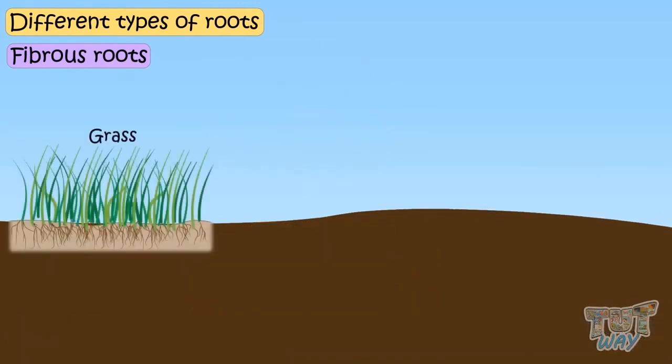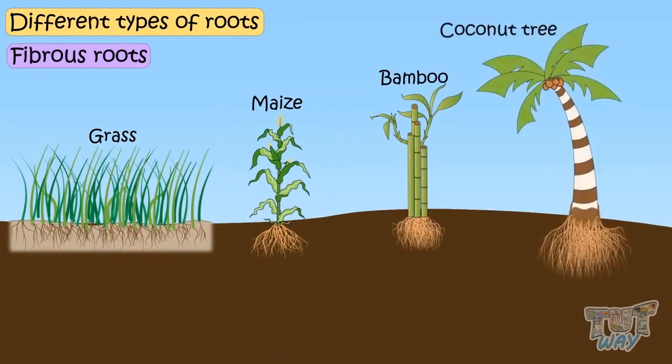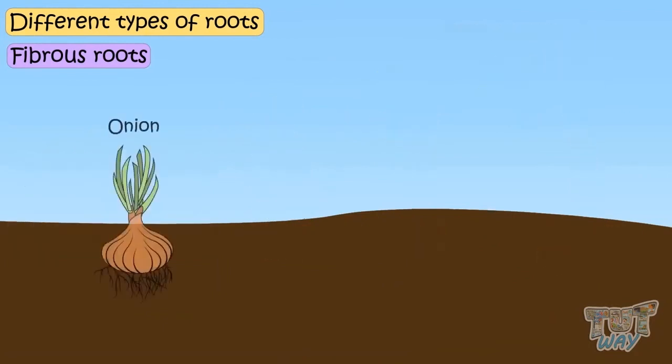Grasses, maize, bamboo, coconut tree, onion, rice and wheat are the plants that have fibrous roots.